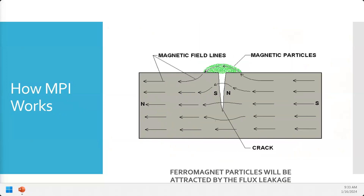This is what the particle indication looks like once we've placed our particles on the surface. Modern magnetic particle inspection uses particles coated with a color or fluorescent coating — essentially iron dust — which helps us see the indication even better.